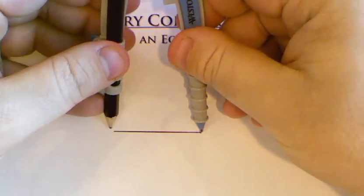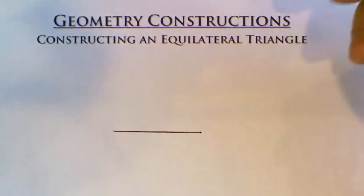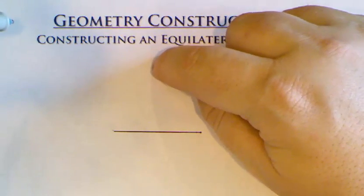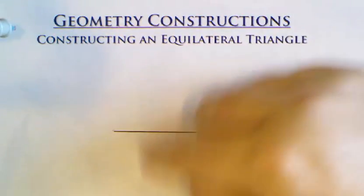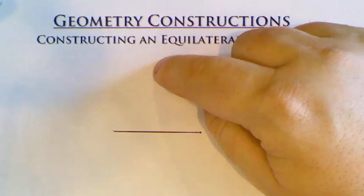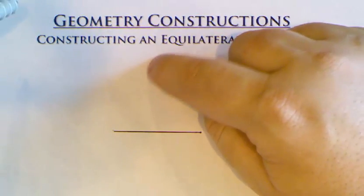The second thing we're going to do is open up our compass to be the length of that side. Now we know that my third point to the equilateral triangle is going to be here, or I guess down here, but I'm going to put my last point of my triangle up here. So I know it's roughly in this vicinity.